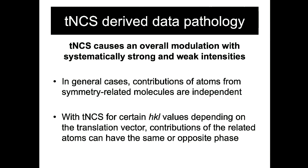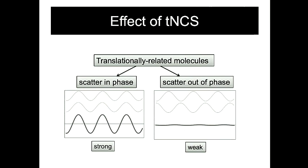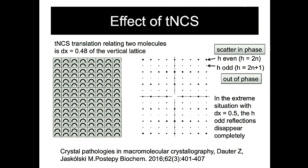When the translationally related molecules scatter in phase, they interfere constructively, so the reflections are stronger. If they scatter out of phase, they interfere destructively, so the reflections will be weaker. We can see here an example of two molecules related by a translation vector in the vertical lattice of almost one half, where the H index even reflections are stronger compared to the H index odd reflections.